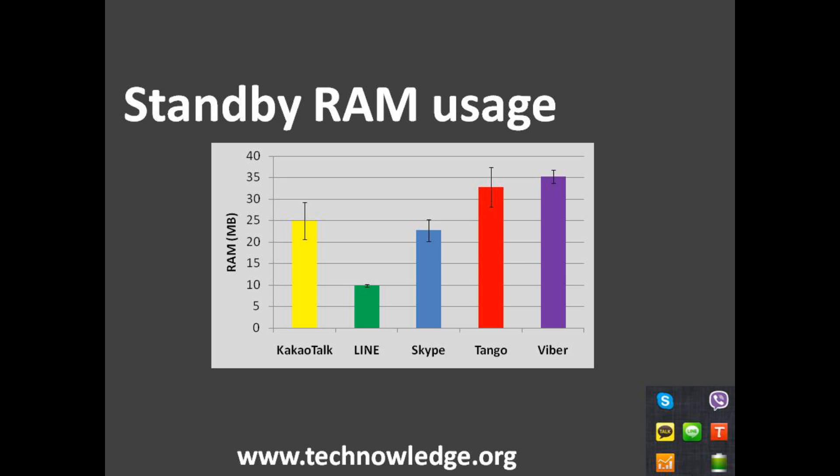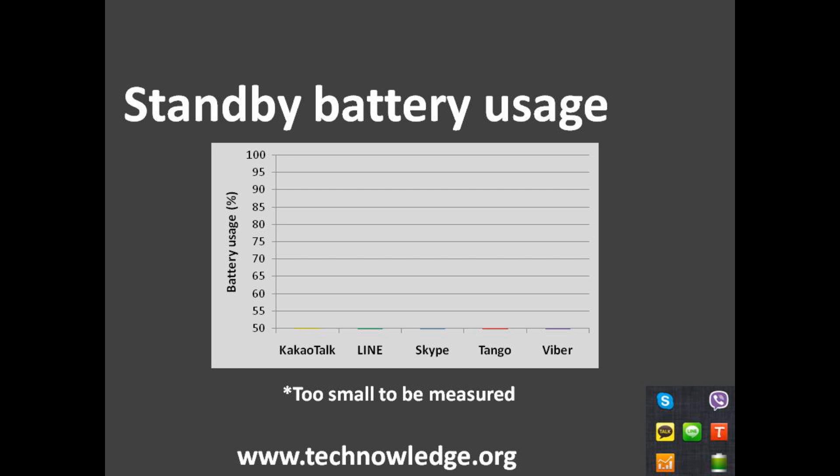Next, we're going to look at the RAM usage by these apps — again in standby mode, with the app running in the background and not during a call. Line stands out as using the least amount of RAM. KakaoTalk and Skype are about equal, and Tango and Viber use the most, though there's not a huge difference between them. The standby battery usage wasn't actually even measurable, so those differences in RAM usage are largely irrelevant. Leaving these apps on in the background is not going to affect your phone battery life in a meaningful way, so it is quite feasible to keep these apps on in the background if you want to use them as an alternative to network calling.